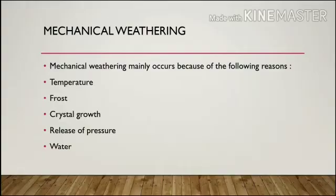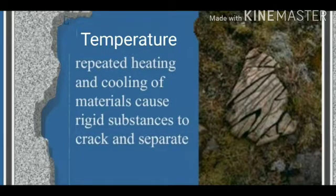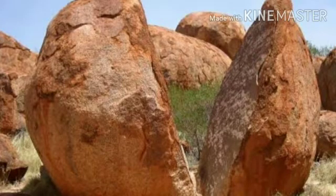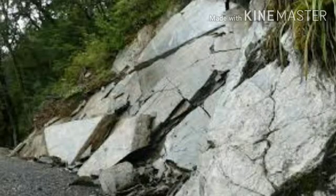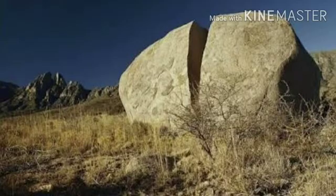Mechanical weathering mainly occurs because of temperature, frost, crystal growth, release of pressure, and water. Regarding temperature: minerals in rocks expand due to heat and contract when temperature decreases. Due to this continuous contracting and expanding, tension develops in the rock particles. Each mineral reacts differently to temperature — some expand more, others less — so tension increases and decreases, causing cracks to develop. In areas where the diurnal range of temperature is higher, weathering of this type is common, as in hot deserts.